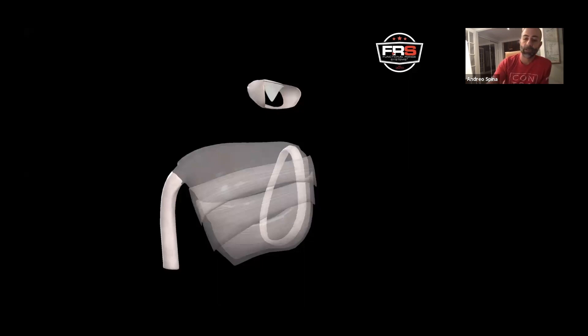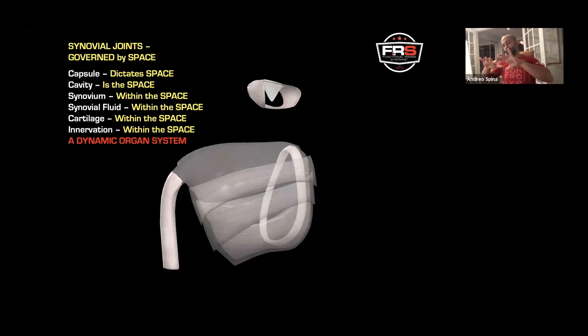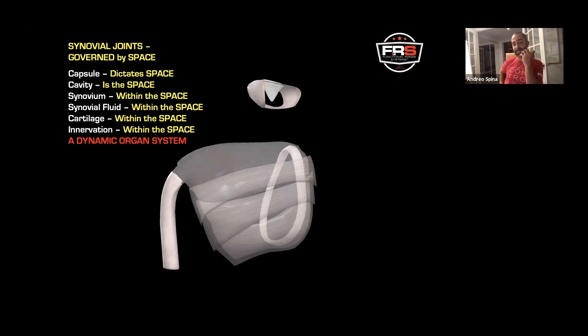Ergo, if there's something wrong with your capsule or the capsular space, you're going to have a really hard time teaching an athlete how to move better. The capsule denotes the space. It governs the space. The capsule itself dictates the space, because it is what sends back information to the central nervous system to tell it how the space is doing.